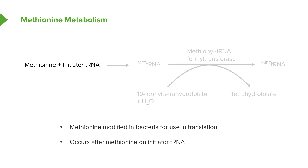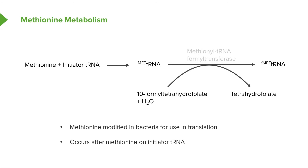Methionine combines first with its initiator tRNA that is used to put it into proteins during translation. This produces the methionine joined to the tRNA. In the reaction that makes formylmethionine, the formyl group comes from 10-formyl tetrahydrofolate and produces the formylated methionine on the transfer RNA. The product of that reaction makes tetrahydrofolate, and the enzyme catalyzing it is methionyl-tRNA formyltransferase.